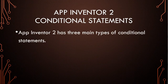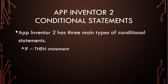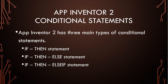App Inventor has conditional statements. There are three main types, but they're all really a variant of one basic statement — the if-then statement. In addition to the if-then statement, we have the if-then-else statement and the if-then-else-if statement. We'll go over those in more detail here.